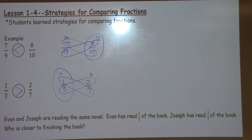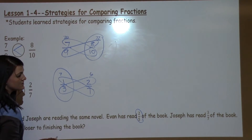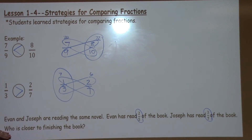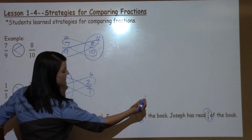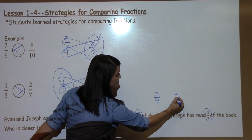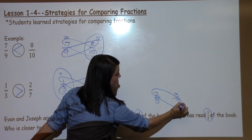This also works when you're comparing fractions in a word problem. It says Evan and Joseph are reading the same novel. Evan has read 2 fifths of the book and Joseph has read 3 sevenths of the book. Who is closer to finishing the book? To solve this problem we'll find out which one is larger — 2 fifths or 3 sevenths — using our butterfly method.